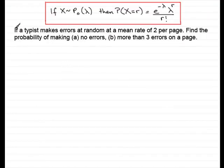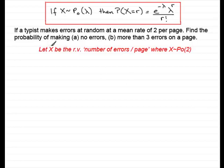Suppose we had a typist. This typist makes errors at a random rate of 2 per page. We've got to find the probability that the typist makes no errors and more than 3 errors on a page. If I assume this is a Poisson distribution, then I need to define my random variable X. The random variable X will be the number of errors per page, where X follows a Poisson distribution with mean 2.